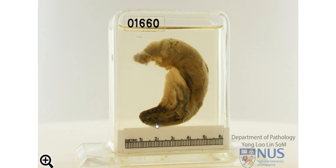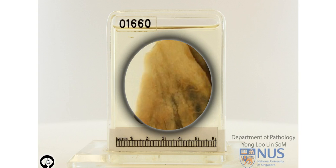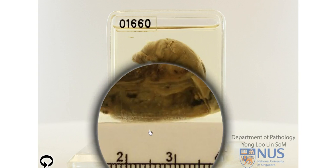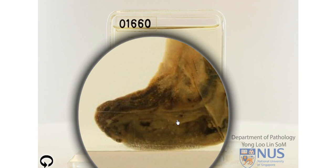Now looking at the tip of the appendix, we can appreciate that the colour is rather dark in the wall of the appendix, and this is due to congestion and hemorrhage. Let's take a closer look. Within the lumen, instead of seeing a very nice clean luminal surface, we are seeing this coating — in the fresh specimen it would appear yellowish-green. This is also purulent material which would be full of neutrophils, necrotic cellular debris, and sometimes even bacterial organisms.